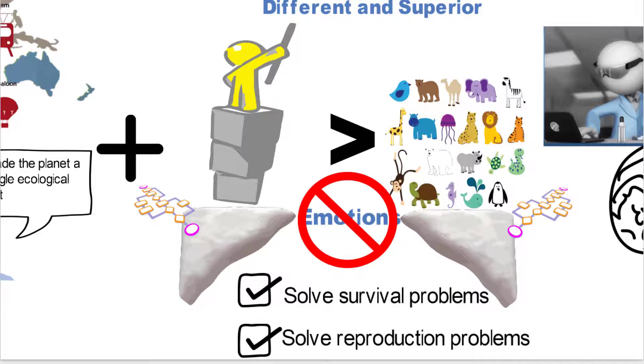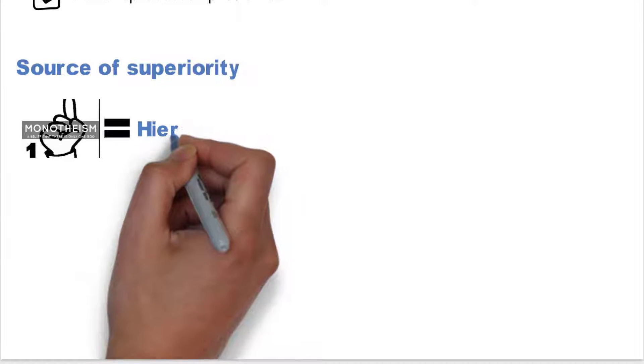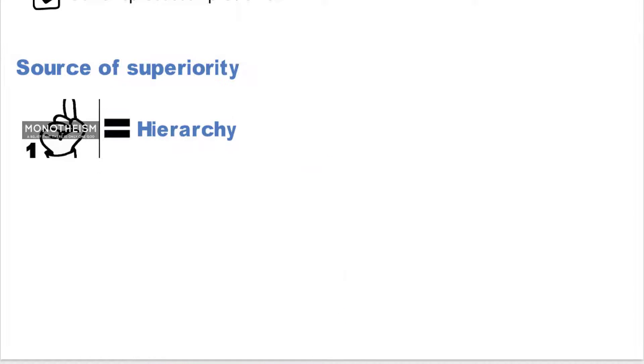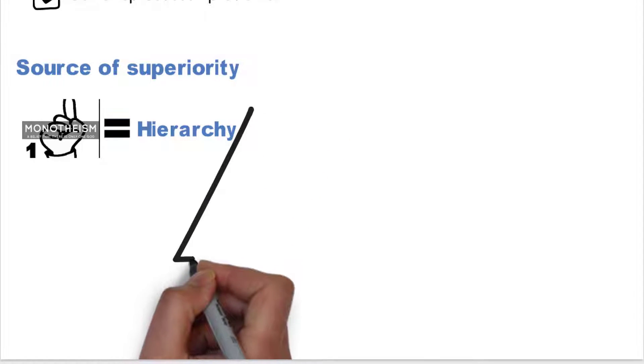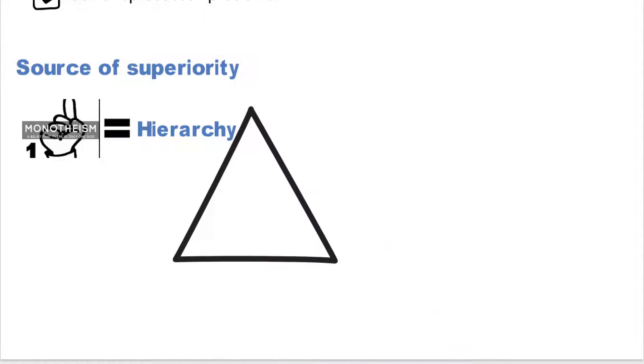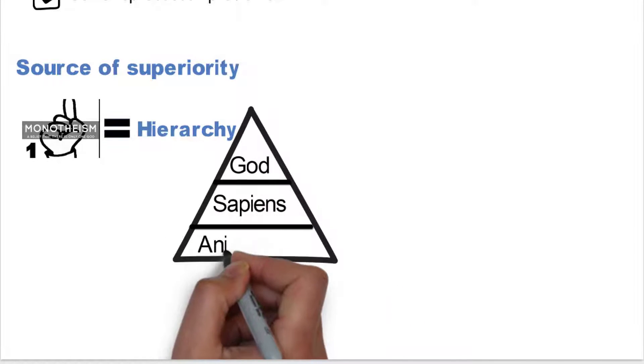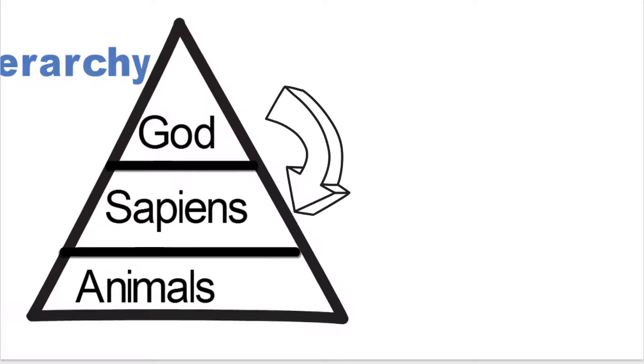So how about superior? Why do we feel like we're superior? What is that source of superiority? Well, some of it can be sourced into this idea of monotheism. Once we started developing monotheistic religions, we got ourselves into this paradigm of a hierarchy, in which we had God at the top, sapiens in the middle, and animals at the bottom.